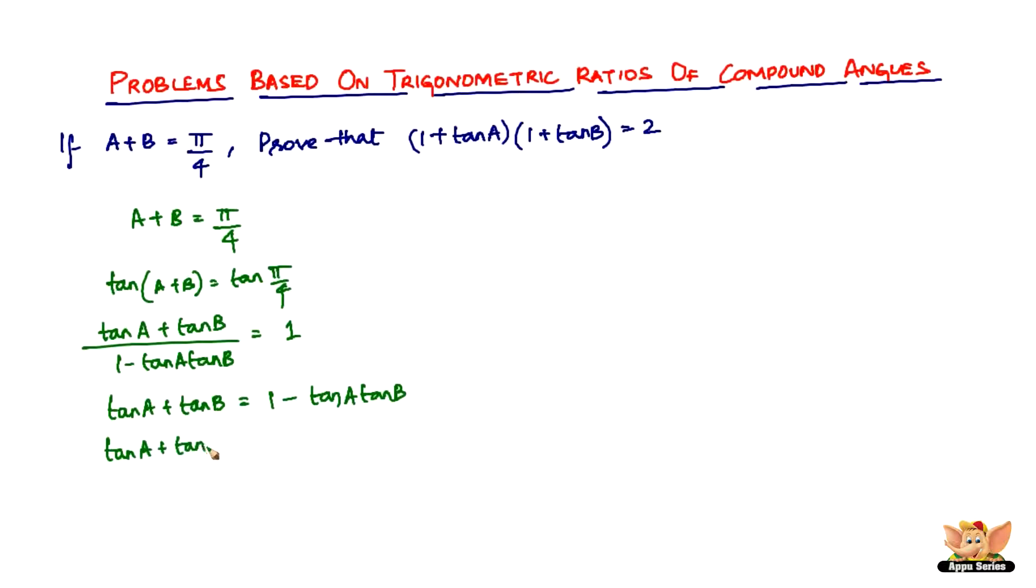Now write tan A plus tan B, get this to the left-hand side, plus tan A tan B equals 1. But we need 2 in the right-hand side, so let us add 1 to both the sides.